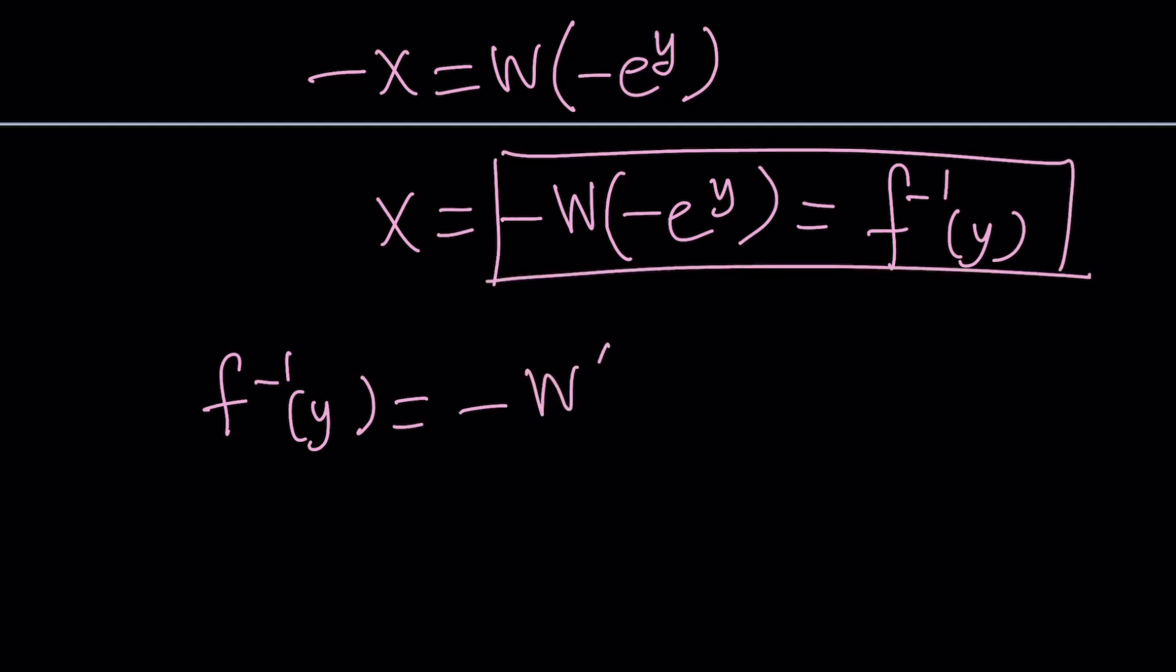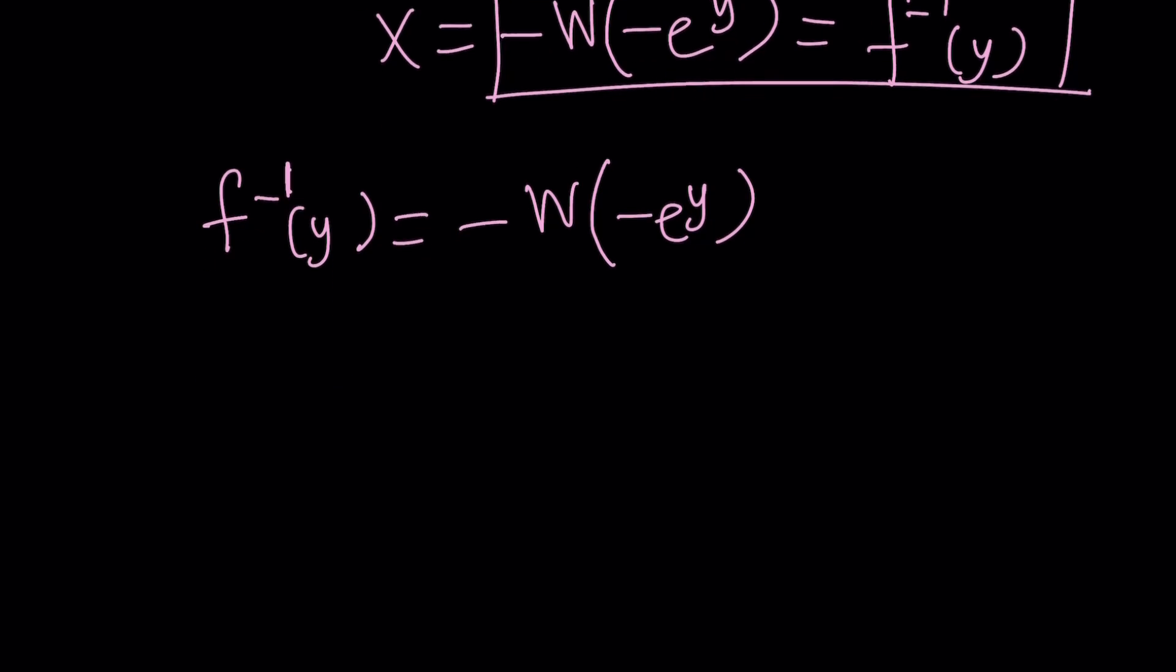-W(-e^y). Those negatives, by the way, they're not going to undo each other out. They're not going to cancel out. So, be careful about that. Since we want to express our solution as f inverse, let's go ahead and just replace the y secretly. Don't tell anyone because we already used the x for something else.